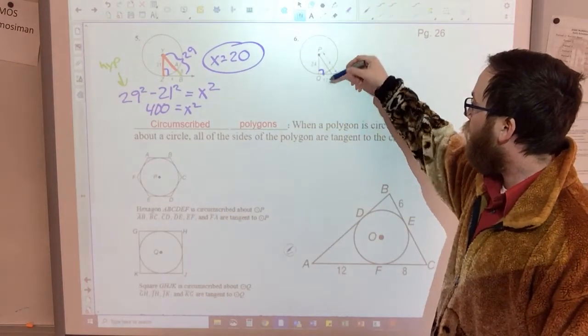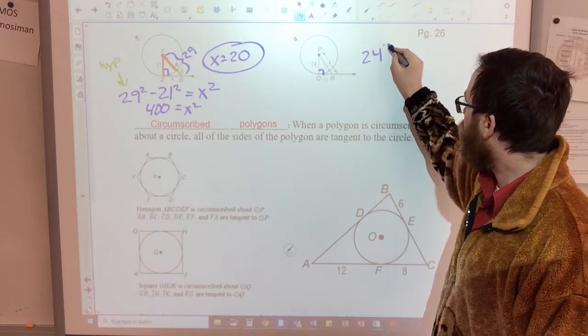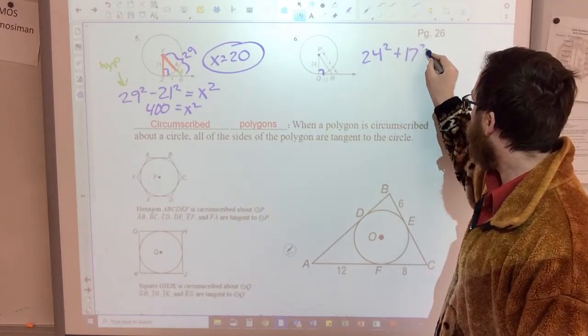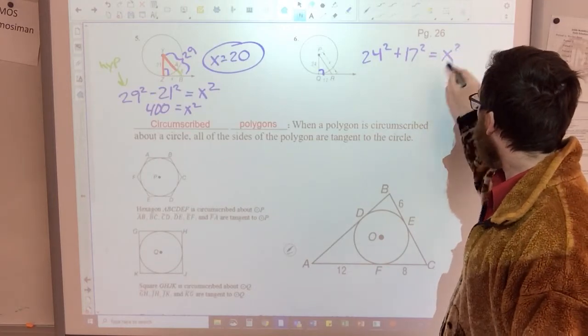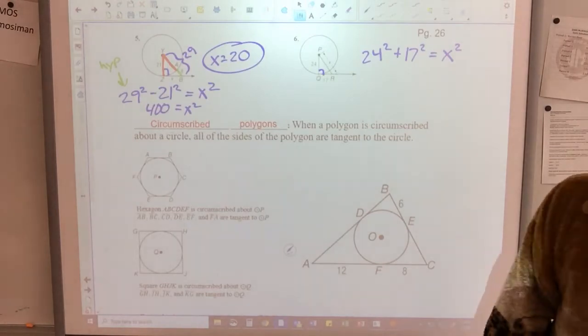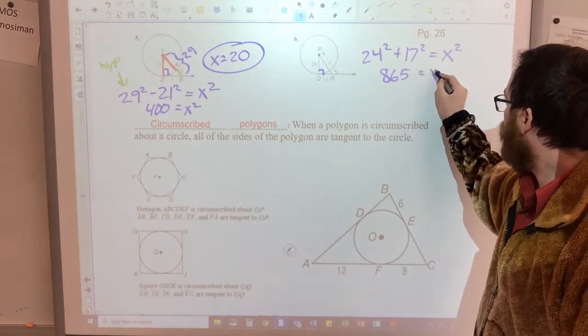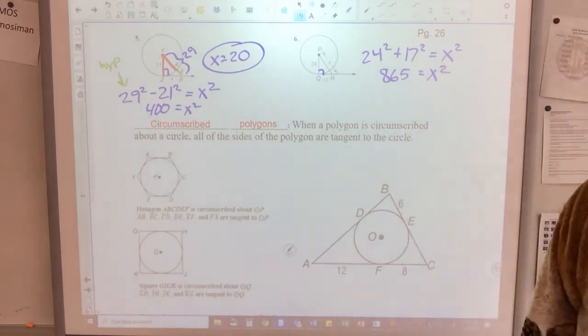This one is now a simple Pythagorean theorem. 24 squared plus 17 squared equals x squared. Simplifying, 865 square root both sides.